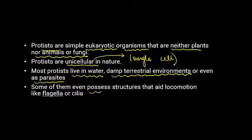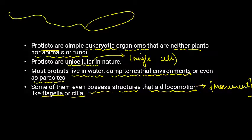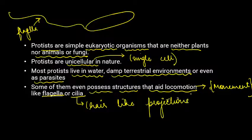Some Protists possess structures that help in locomotion — that is, movement. These structures are flagella or cilia. Flagella are whip-like structures, and cilia are also hair-like projections that help in movement.